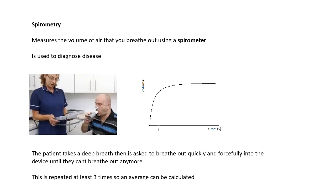Basically, you ask the patient to take a deep breath. First of all, they relax. You put a clip on the nose. You ask them to take a deep breath and then breathe out as quickly as possible, and then also keep breathing out as much as they possibly can — big, deep breath — and the nurse will be going, keep going, keep going, keep going. And then you'll get this graph. If it's taking readings over time, we'll end up with a graph of volume against time, and it's repeated three times so that you can take an average.